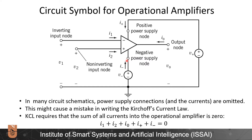When we deal with an operational amplifier, we say that it's an active circuit element — it takes a very small input but can generate a big output. That additional power which is outputted is actually being supplied by the positive or negative power supply, which we don't consider in the circuit analysis process. If we write Kirchhoff's current law for the op-amp, we have I1 plus I2 plus I_minus_supply plus I_positive_supply plus I0 equals zero.